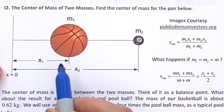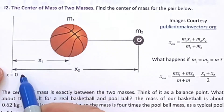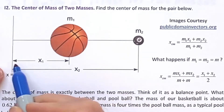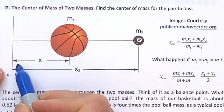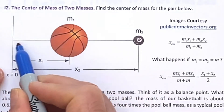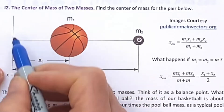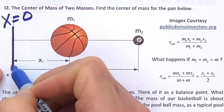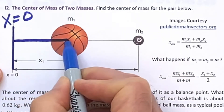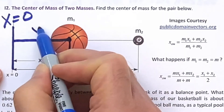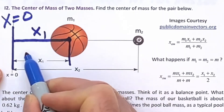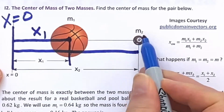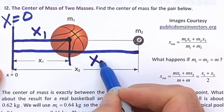This is the reference. It's a one-dimensional problem, so we're only interested in the x. The first mass is x1 away from the reference — this is the reference, x equals zero. And if you go way out here to where the pool ball is, that's x2.